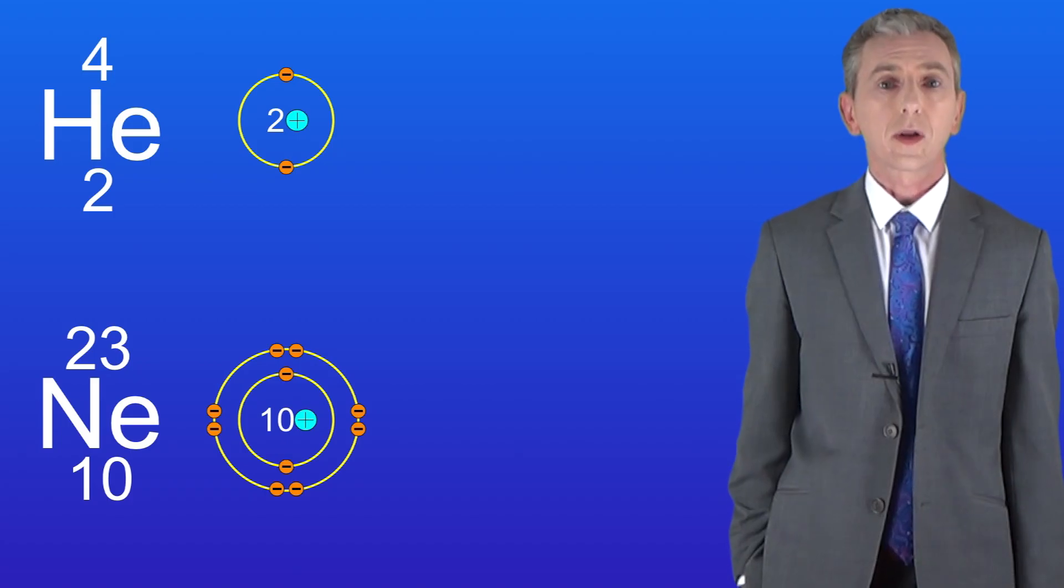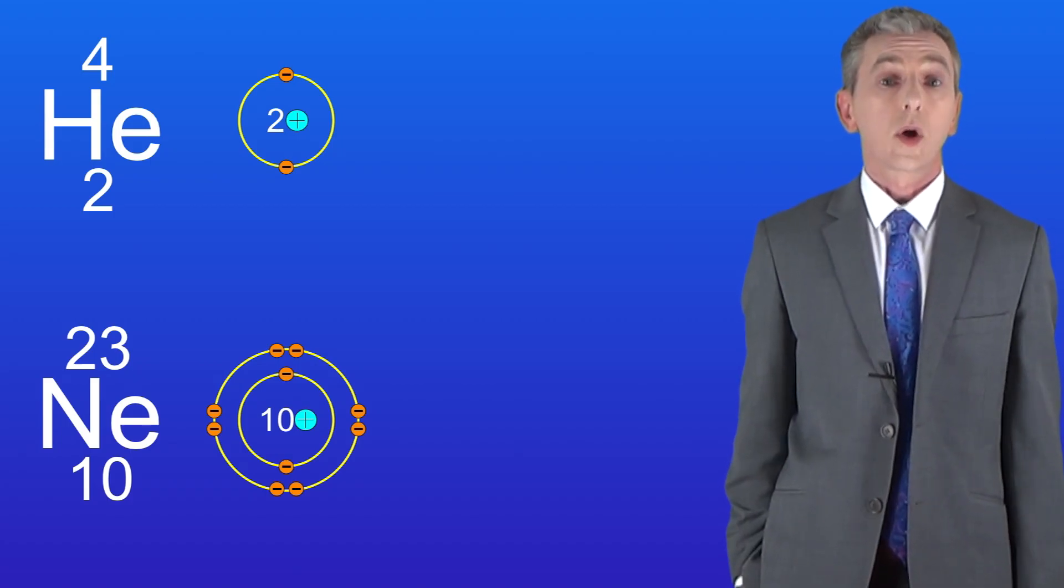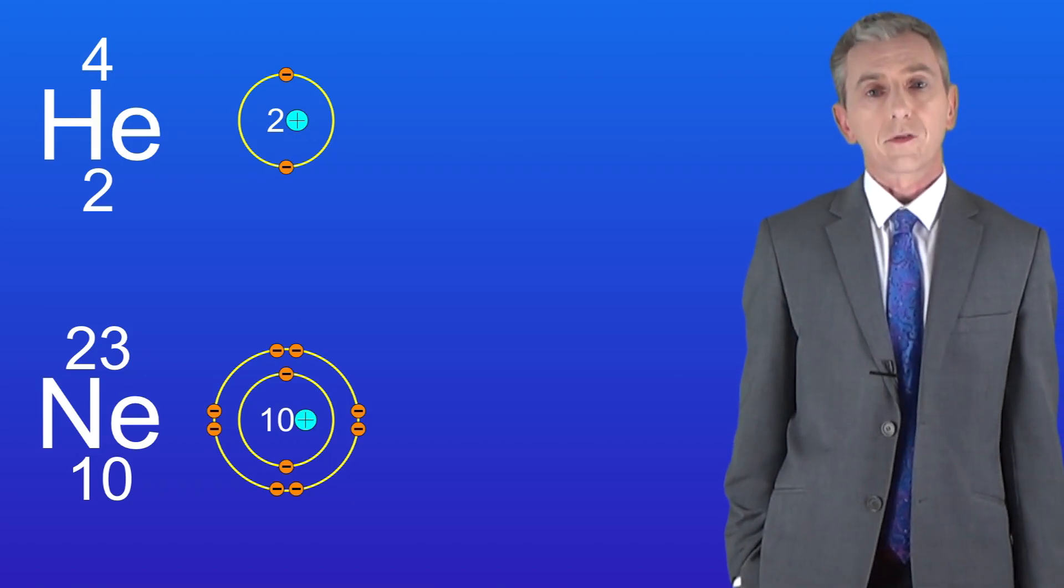Remember that the second energy level can hold a maximum of eight electrons so you can see that in neon this energy level's full. So because neon has a full outer energy level it's an unreactive element.